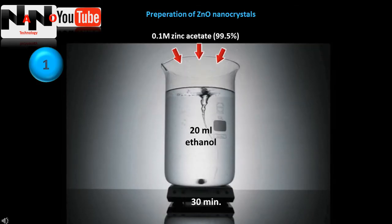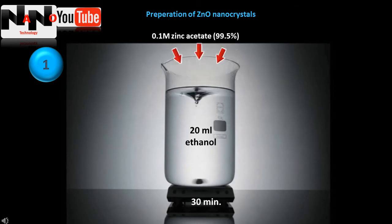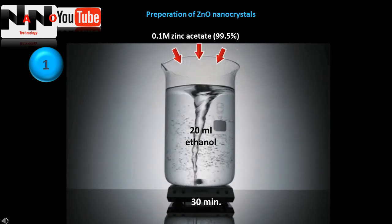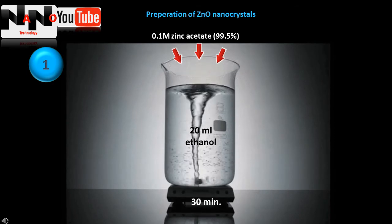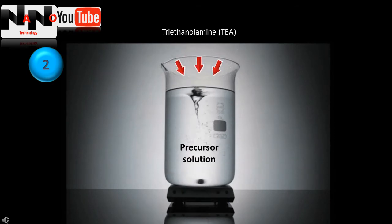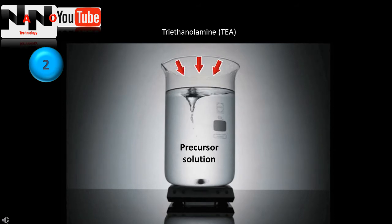At first, zinc oxide nanocrystals are synthesized by the sol-gel method. For this purpose, 0.1 molar zinc acetate is dissolved in 20 milliliters of ethanol and stirred for 30 minutes. Then triethanolamine is added to the precursor solution for gaining a homogeneous sol.